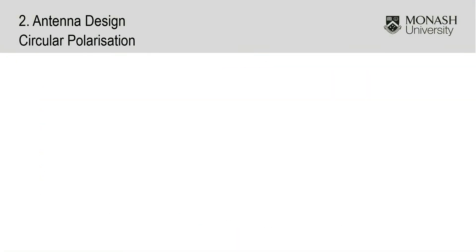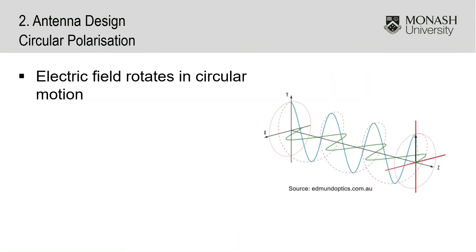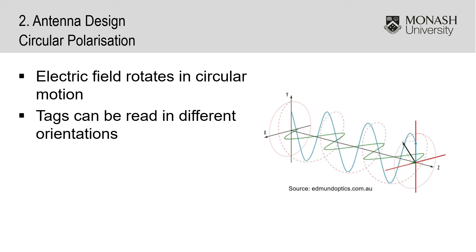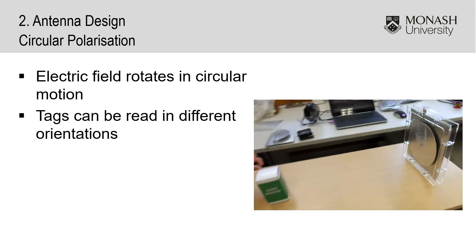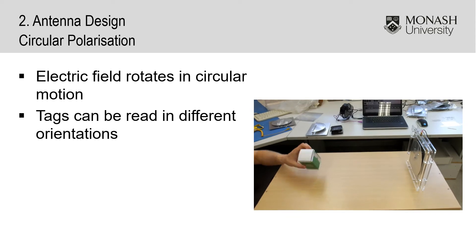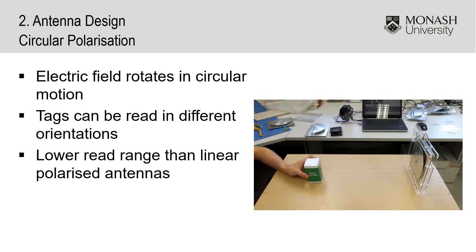In a circular polarized antenna, the electric field produced rotates in a circular motion perpendicular to the direction of propagation. This rotating field allows tags to be read in different orientations, however it will have a much lower read range than linear polarized antennas.